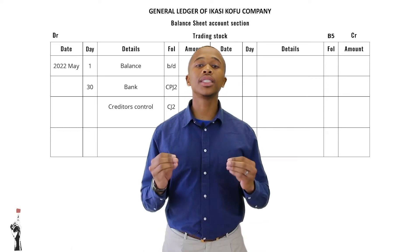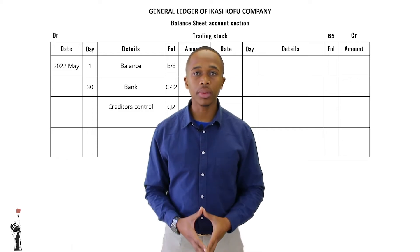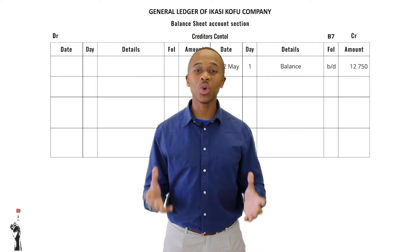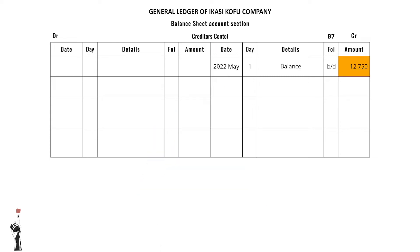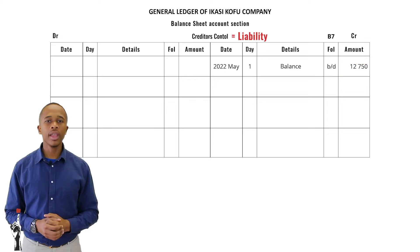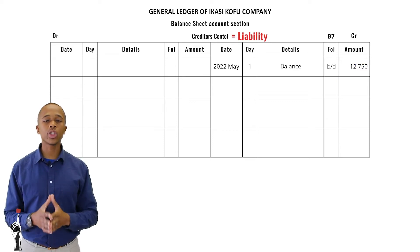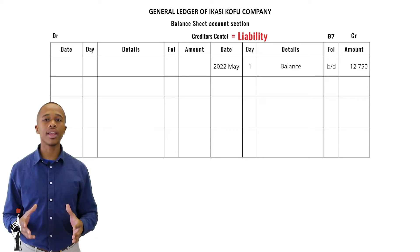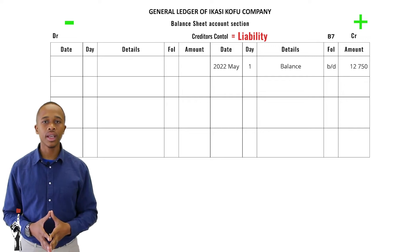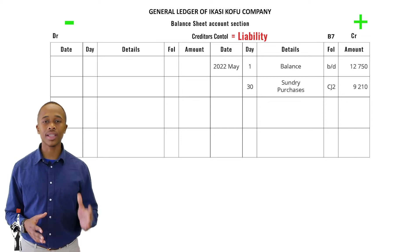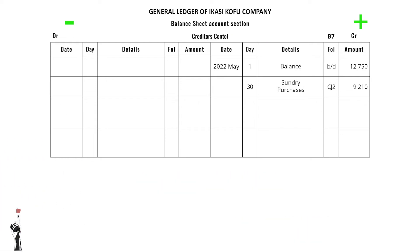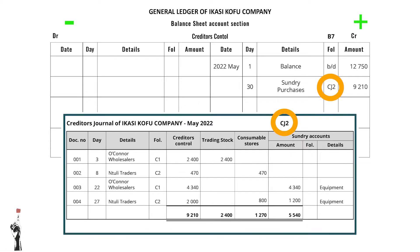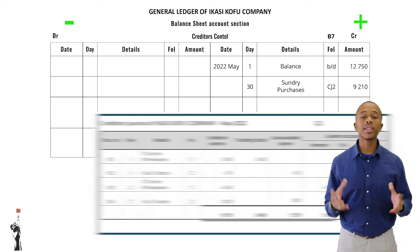Now that the T-account of trading stock has been completed, we will now be looking at creditors control. As always, the balance has already been recorded. Remember, creditors control is a liability — therefore each time Ikasu Kofu Company buys on credit, the liability increases and this will be recorded on the credit side. Remember the DALIC acronym — and we will find this amount in the CJ, the creditors journal.